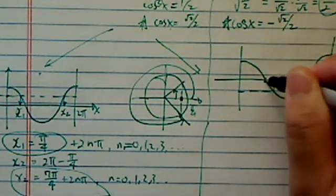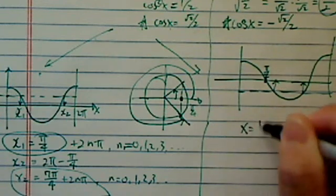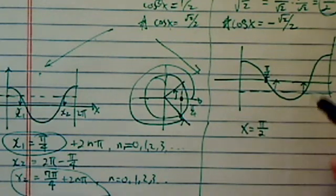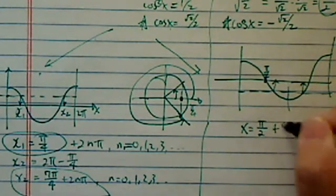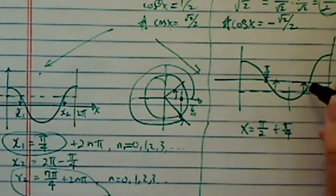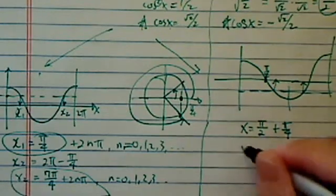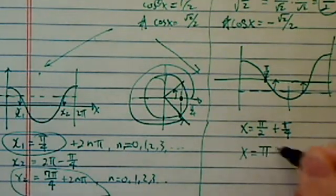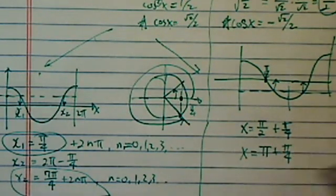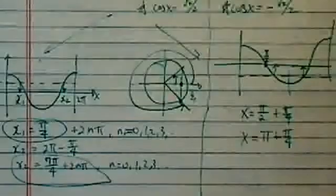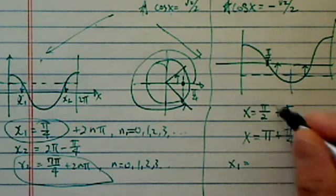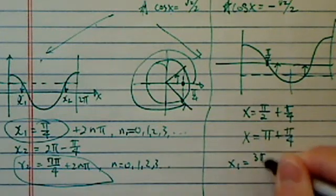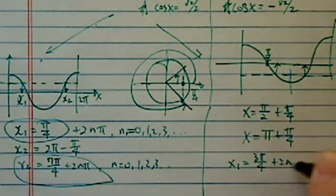So obviously this is pi over 2. So my x is equal to pi over 2 plus pi over 4. This one is pi plus pi over 4. So I have two x's as well. One here is equal to, let's see, 3 pi over 4 plus 2n pi.